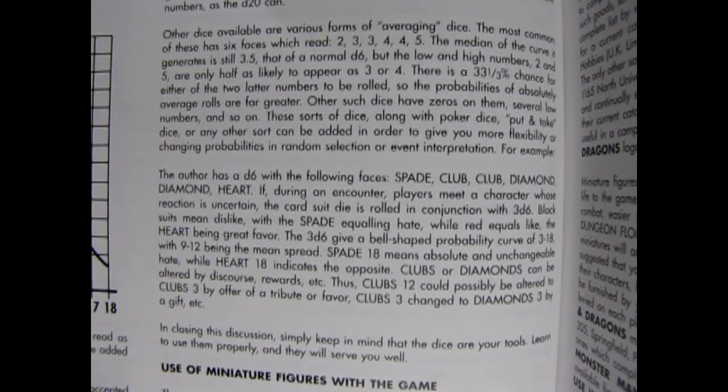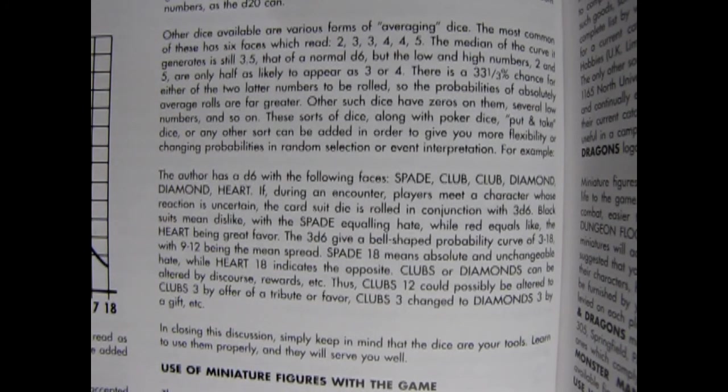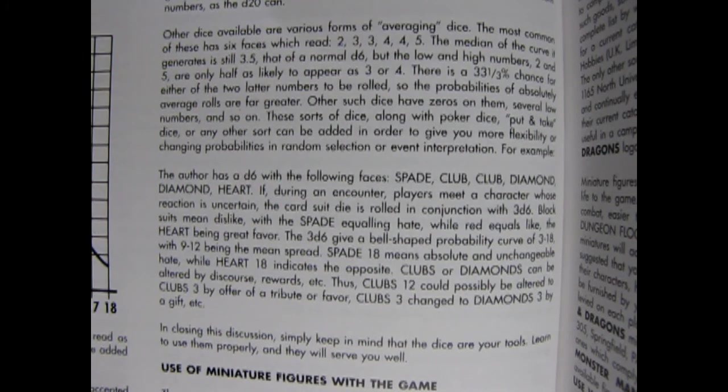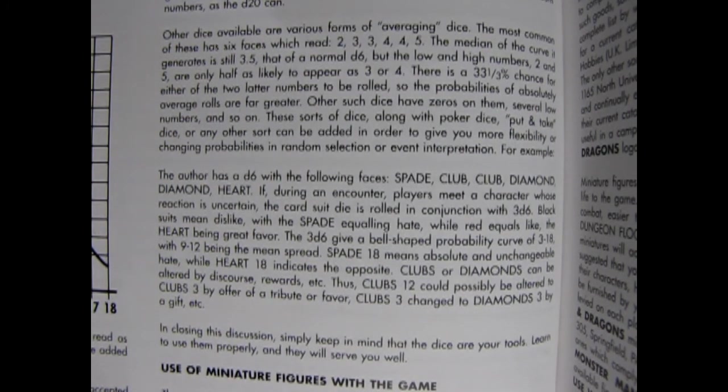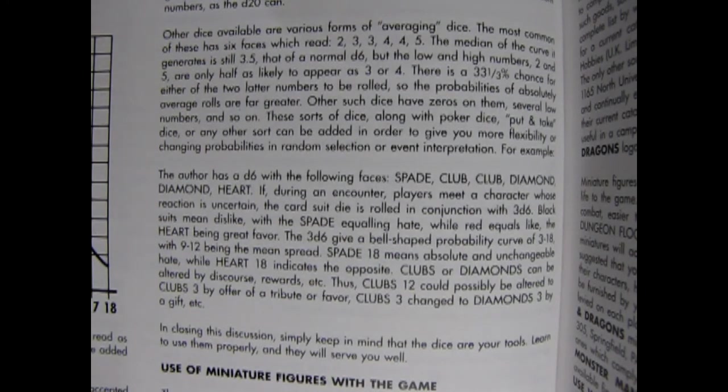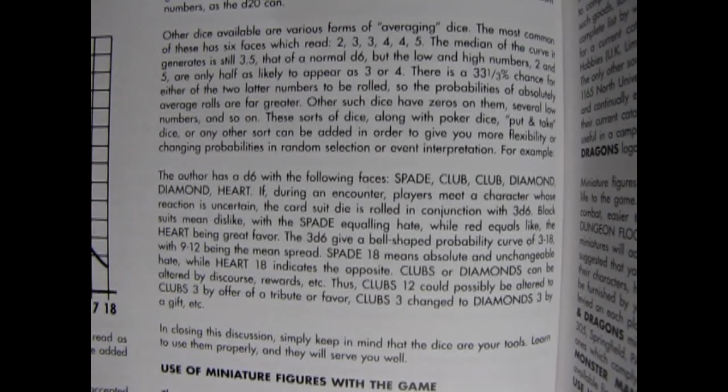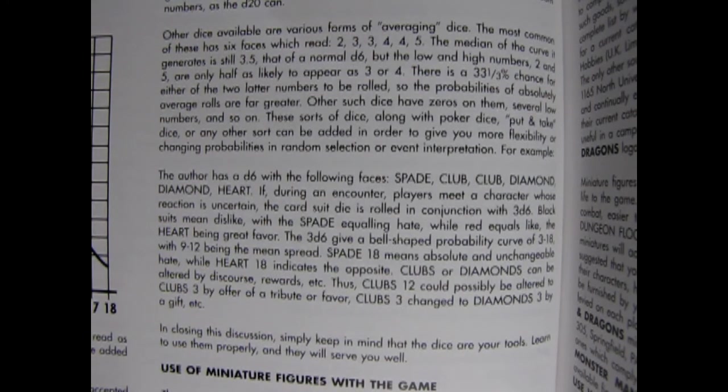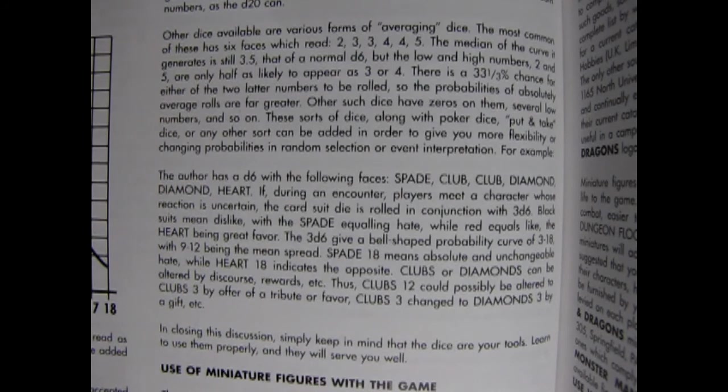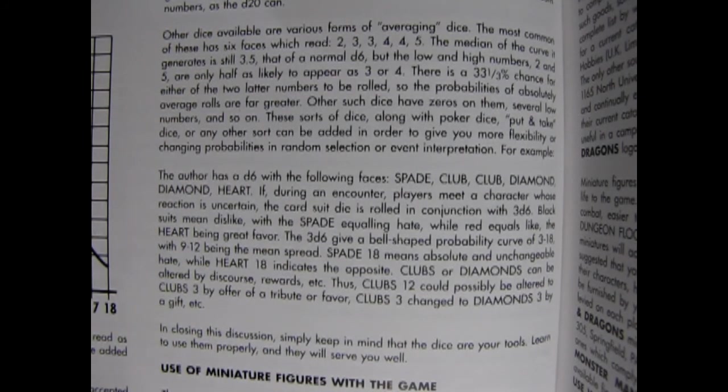Other dice available are various forms of averaging dice. The most common of these has six faces, which read 2, 3, 3, 4, 4, 5. The median of the curve it generates is still 3.5, that of a normal D6, but the low and high numbers 2 and 5 are only half as likely to appear as 3 or 4. There is a 33 and a third chance for either of the two latter numbers to be rolled. Other such dice have zeros on them, several low numbers, and so on. These sort of dice, along with poker dice, put and take dice, or any other sort, can be added in order to give you more flexibility.